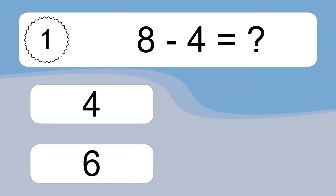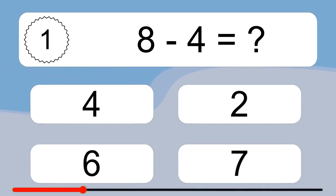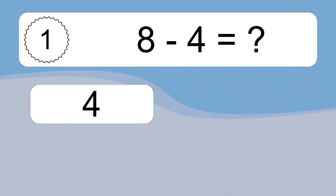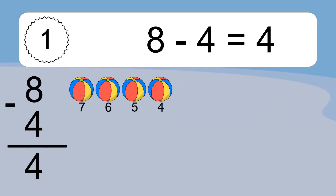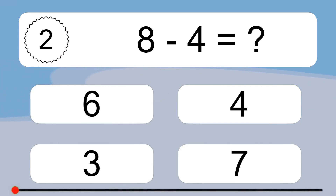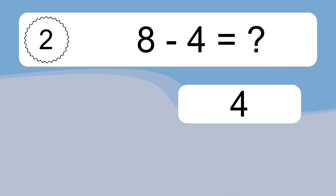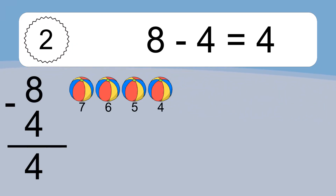8 minus 4 equals what? 8 minus 4 equals 4. Let's count it: 7, 6, 5, 4.